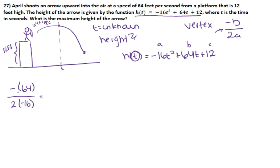When we simplify this, negative 1 times 64 is negative 64. 2 times negative 16 is negative 32. 64 divided by 32 is 2. Negative divided by negative is positive. So we'll be left with positive 2 seconds is where our maximum height will be.